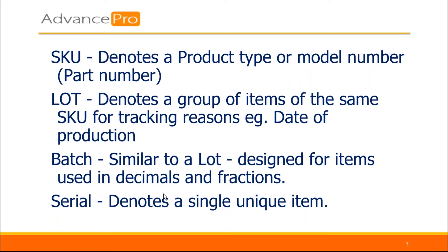Let's start at a high level. What are lot, serial, and batch numbers? We'll start even higher with the SKU. A SKU denotes a product type or a model number — you might know this as a part number. SKU stands for stock keeping unit, and it gets applied to all of your products in a particular model. So if you sell alarm clocks or engine parts, the SKU identifies all of those items. Some people refer to this as a part number, and you'll see that in QuickBooks.